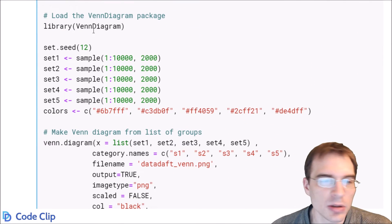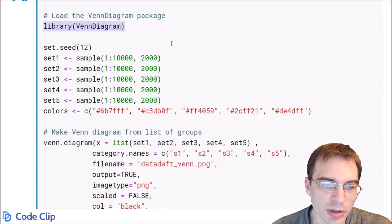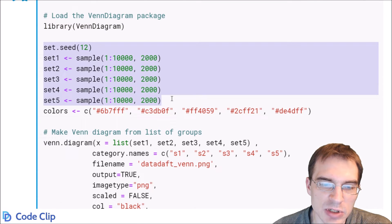We're going to load in the Venn diagram package to start with. To use the function, you basically just need to pass in a list of each of the groups that you want to make the diagram for. So we're just going to generate some random data here to create the groups. We're going to actually make a five-section Venn diagram here, and we're going to make five different sets.